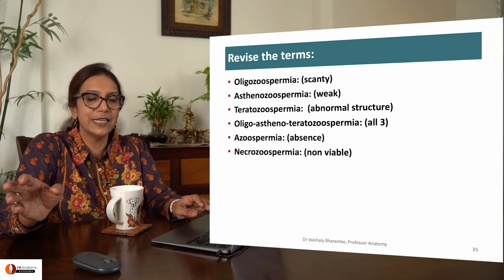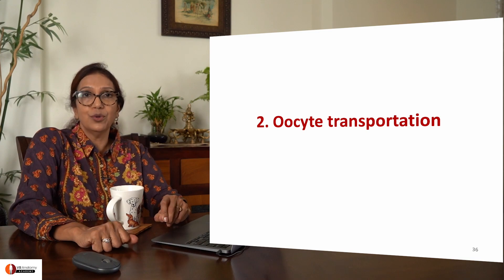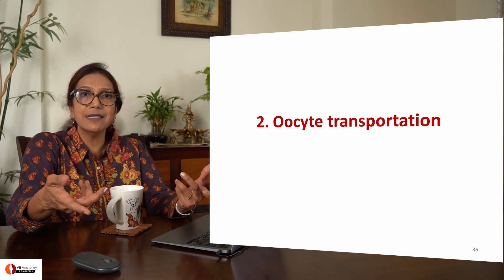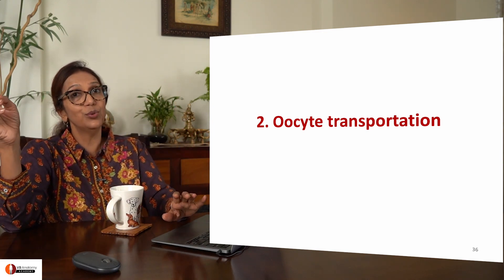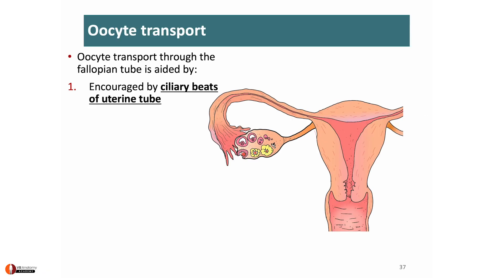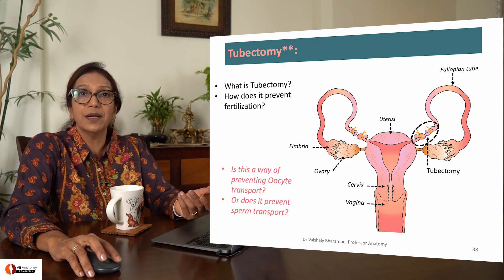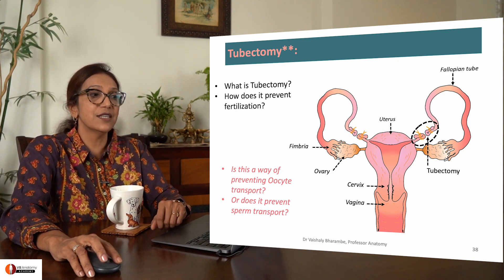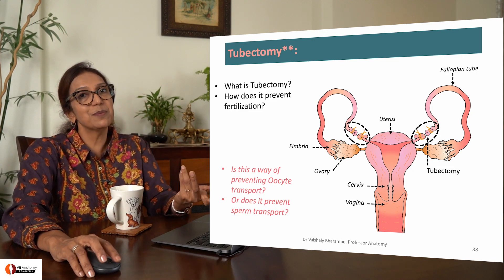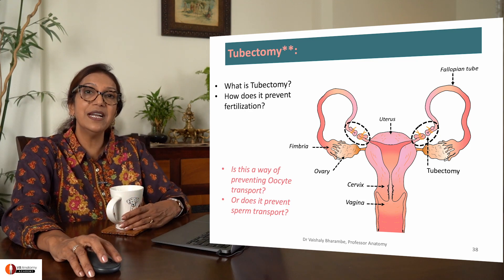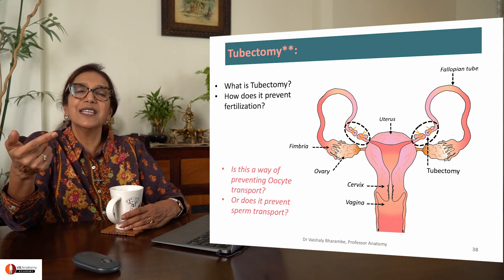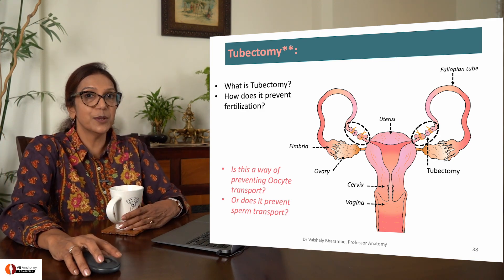With this we have discussed sperm transport, sperm abnormalities, and semen analysis. Now let us talk about oocyte transport. The oocyte is produced by the ovary and is picked up by the ciliary fimbriae of the uterine tube covering the ovary. Muscle contraction helps pull the oocyte to reach the ampulla of the fallopian tube. Similarly, tubectomy affects oocyte transport — the oocyte reaches the ampulla but sperms don't — thus preventing fertilization.